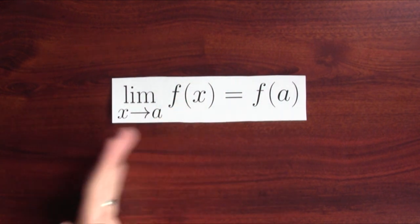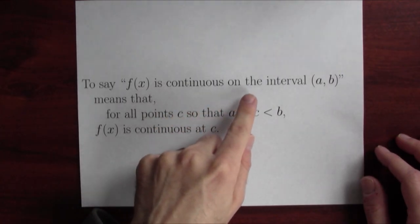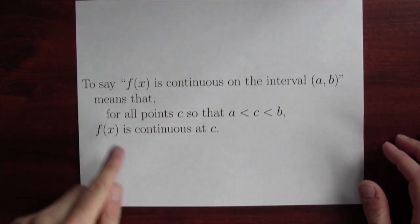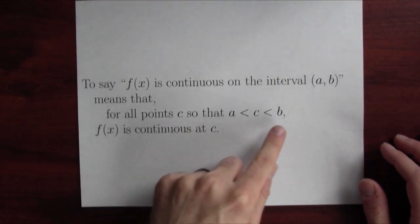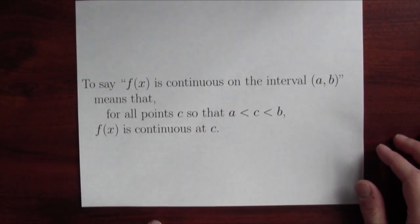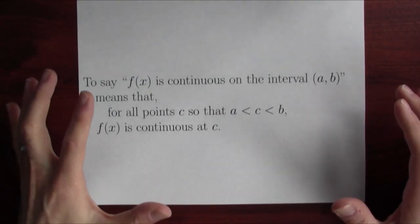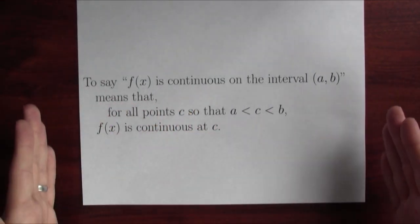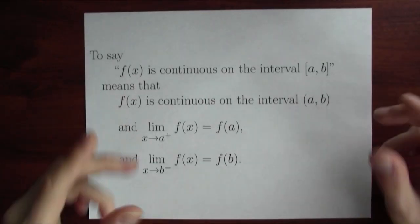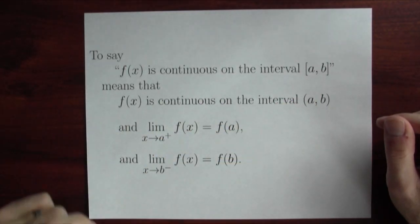But often we'll want to talk about continuity on a whole interval at once, so we'll make a slightly fancier definition. To say that the function is continuous on a whole open interval from A to B is to say that for all points C in between A and B — so C is bigger than A and less than B — f of x is continuous at that point C. So that's the definition for open intervals. We have to be even a bit more careful when we talk about continuity on a closed interval A, B as opposed to the open interval A, B.